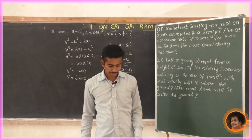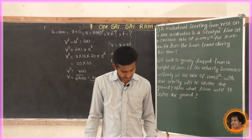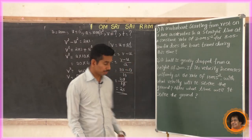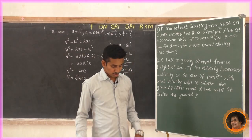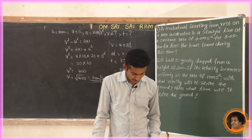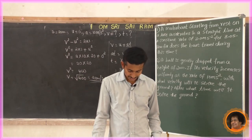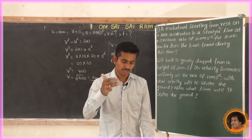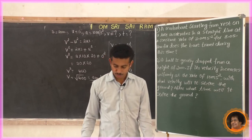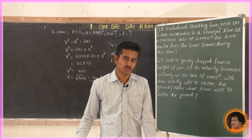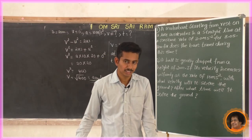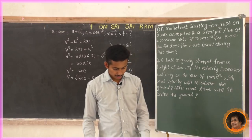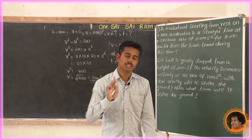Now, some problems are given in the textbook on page number 112. I have already solved problems 4 and 7. The remaining problems — 1, 2, 3, 5, 6, 8, 9, and 10 — are homework. Use the same equations of motion formulas: v = u + at, s = ut + ½at², and v² - u² = 2as, to find solutions for these problems.